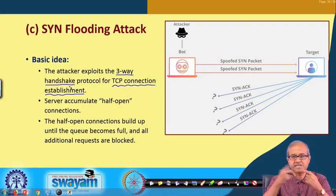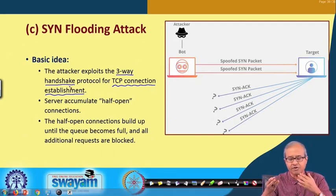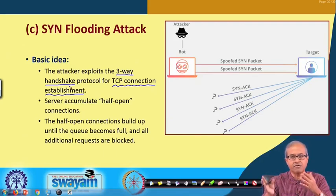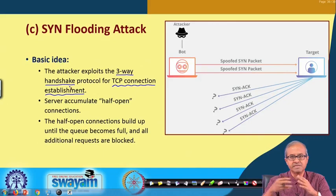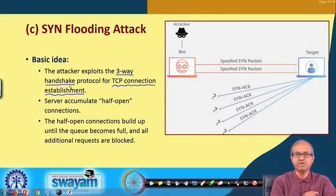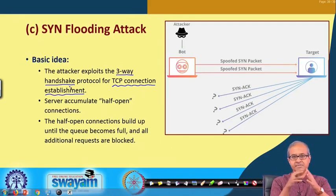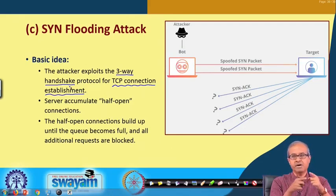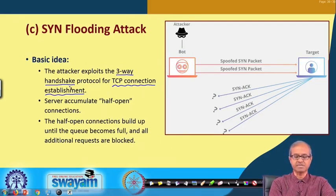TCP connection is established using a three-way handshake protocol. There is a SYN followed by a SYN-ACK followed by another ACK packet sent — three packets are exchanged between a source and a target before a TCP connection is established.